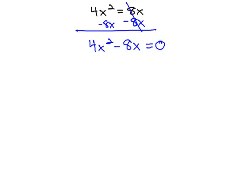When factoring, the first thing we always factor is the greatest common factor. Here, we have a greatest common factor of 4x, which leaves us with x minus 2, and it still equals 0.